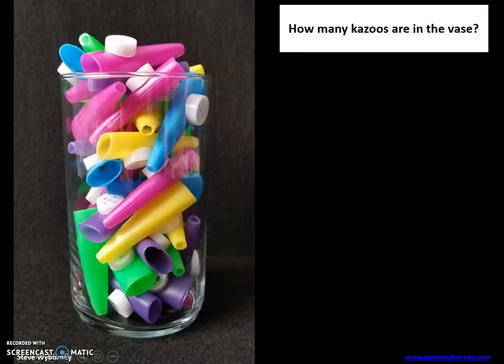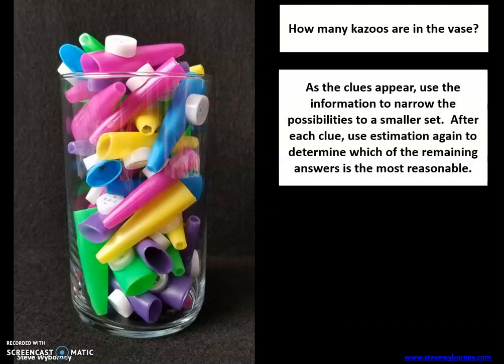How many kazoos are in the vase? Think about that. As the clues appear, use the information to narrow the possibilities to a smaller set. After each clue, use estimation again to determine which of the remaining answers is the most reasonable.